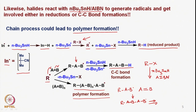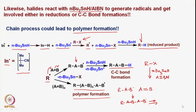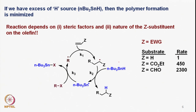From the organic synthesis point of view, we need both alternatives: either reduce RX to RH, or stop the reaction after one C–C bond has formed. If we have excess hydrogen source, polymer formation can be minimized. In order for the reaction to be arrested after forming R-A-B-dot, we need tributyltin hydride in sufficient quantity so that it reacts to form the terminated product after one C–C bond is formed.